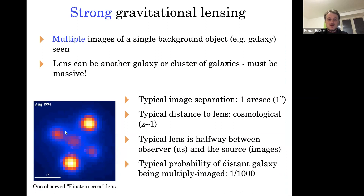Strong gravitational lensing is the most familiar kind — this is when you get multiple images from a source. Typically you have a faraway galaxy or quasar, and you have something in front, the foreground object, which could be a galaxy or cluster of galaxies, and you see multiple images. This was first discovered in the 1970s at cosmological distances. Typically you get about one arc second separation, with redshift around unity for both the foreground lens and the source.